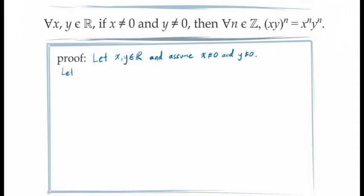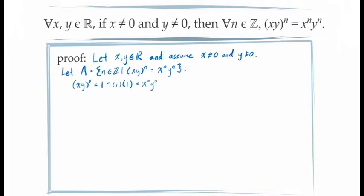To begin the proof, we let x and y be arbitrary real numbers and assume that x and y are both non-zero. We're going to prove that for all values of n in the set of integers our equation holds, using the principle of mathematical induction applied to the integers. First, we show that 0 is an element in the set A. When n equals 0, the left-hand side is xy to the exponent 0, which is defined to be 1. We also know that 1 equals 1 times 1, which is x to the exponent 0 times y to the exponent 0. So our equation holds when n equals 0, proving that 0 is an element in the set A.